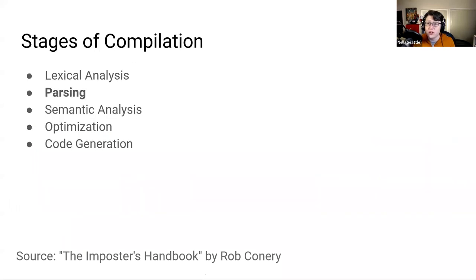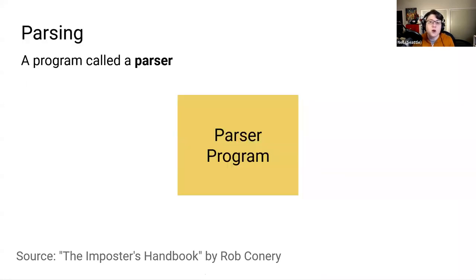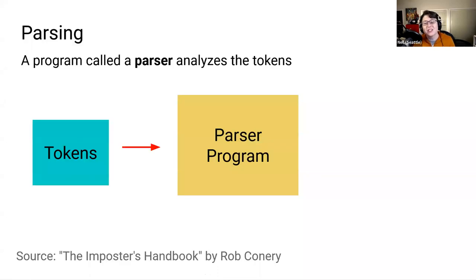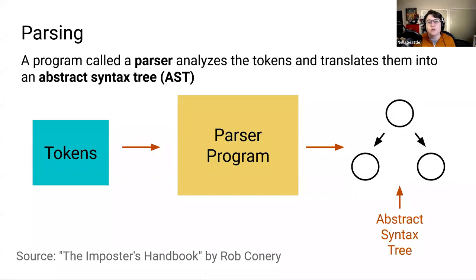Then we move on to the next stage of compilation called parsing. In the parsing stage, a program within the compiler called a parser takes the tokens generated by the Lexer and translates them into an abstract syntax tree, or AST. Having the tokens in this AST data structure makes it much quicker and easier for the compiler to do the rest of its work.